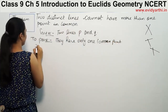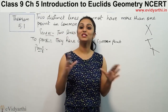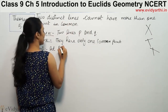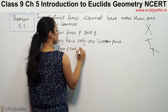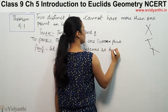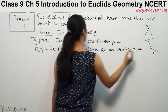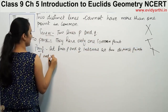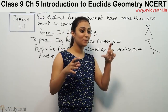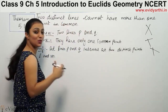Proof. Now let the two lines intersect at two different points. Lines P and Q intersect at two distinct points L and M. We are assuming they intersect at two points. So basically there are two different distinct points, and these lines are passing through two distinct points.